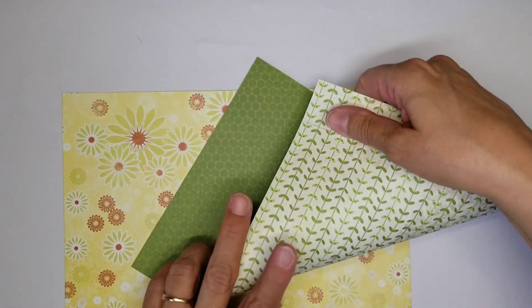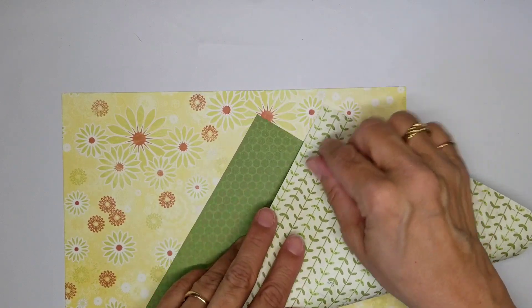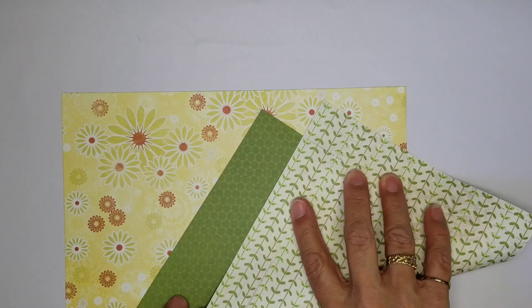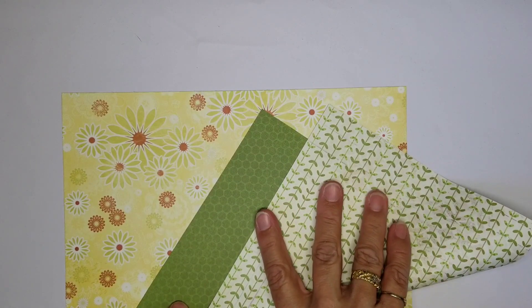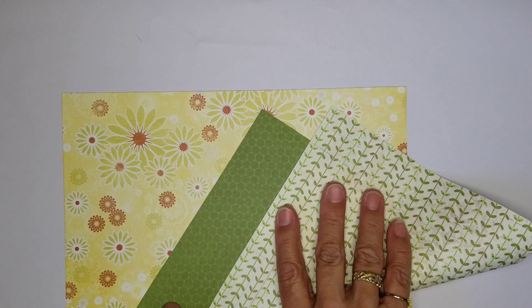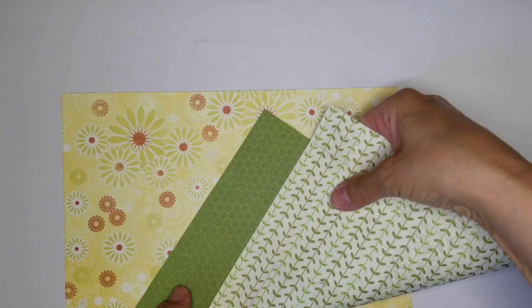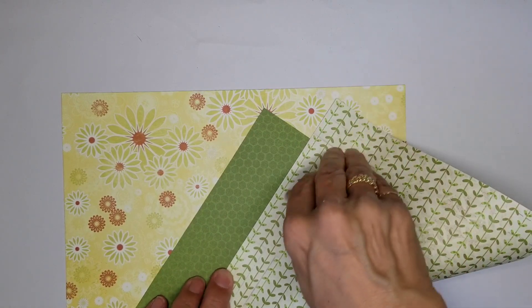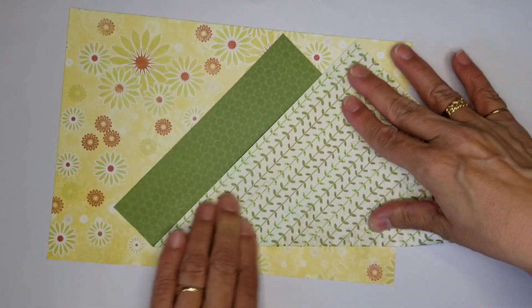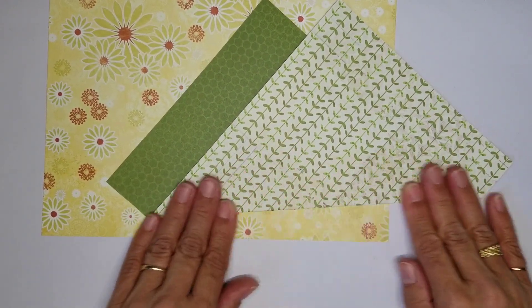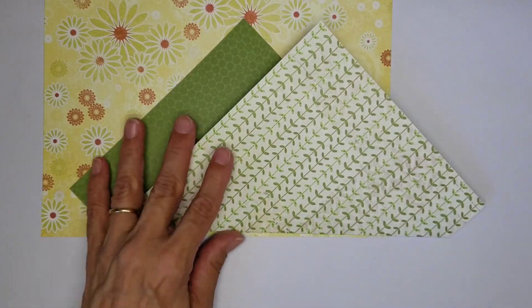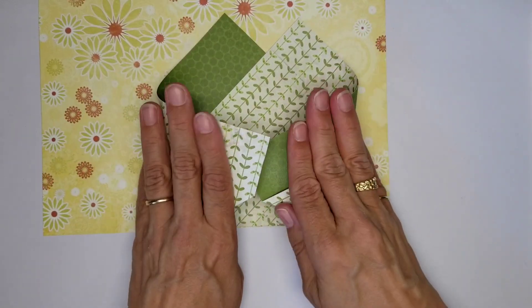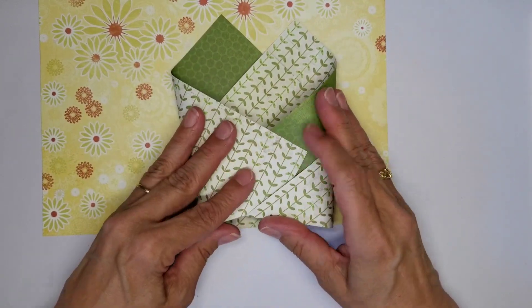So once again, make sure that this V, both sides are approximately the same size, and try to make this fold nice and straight. This is a little stiffer paper, so it's harder to make sure everything folds perfect. Get out my bone folder.